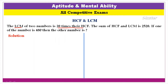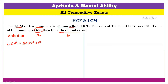We are looking at the two numbers — one number is 480 and we need to find the other. Let the two numbers be A and B. We also know that LCM is 20 times the HCF. So first, we need to find out the HCF value, let's call it X.